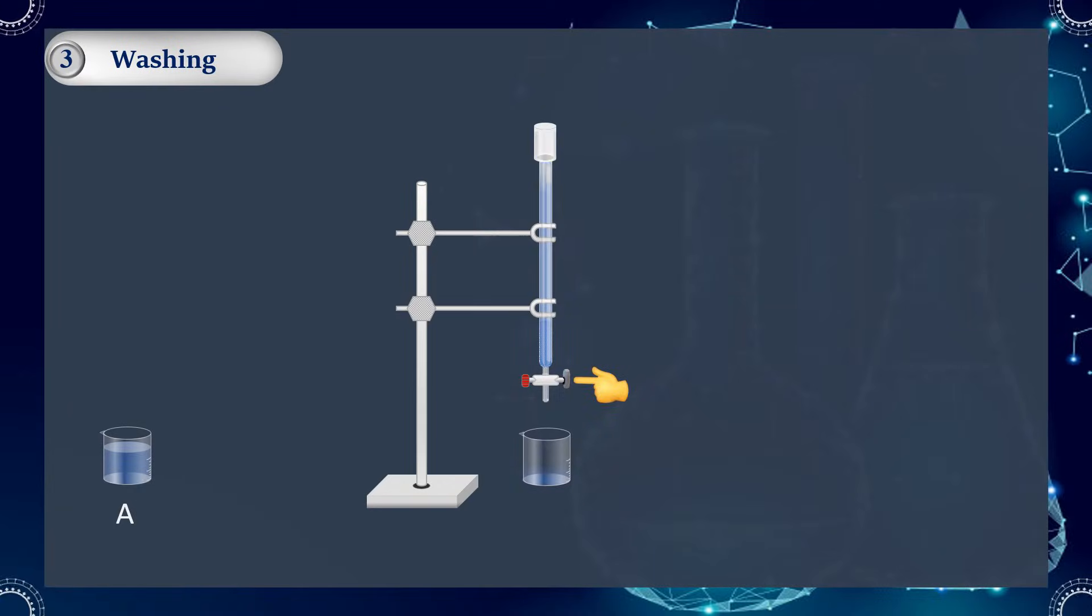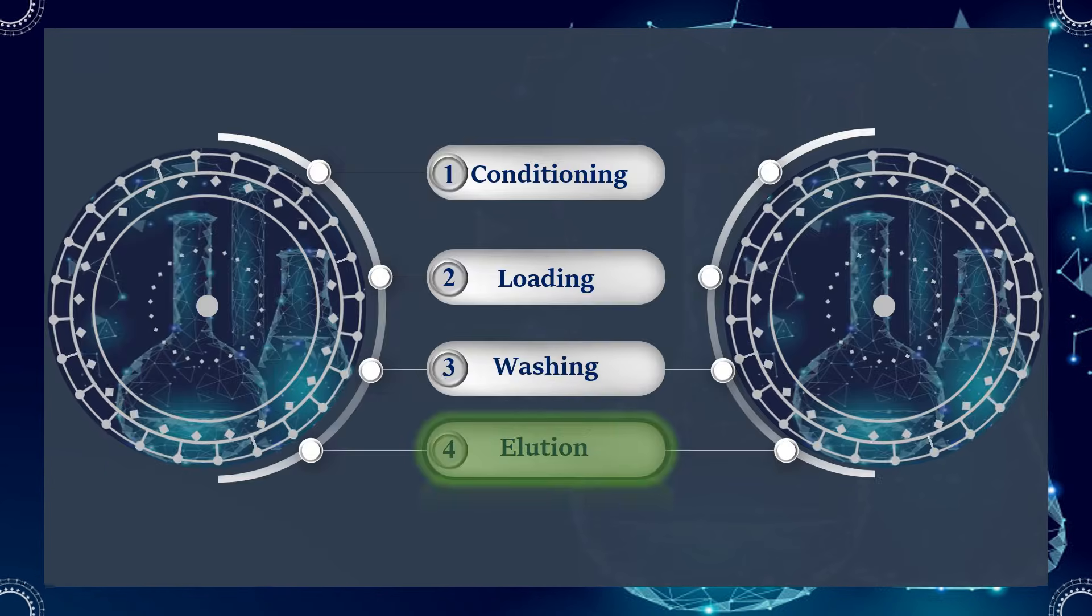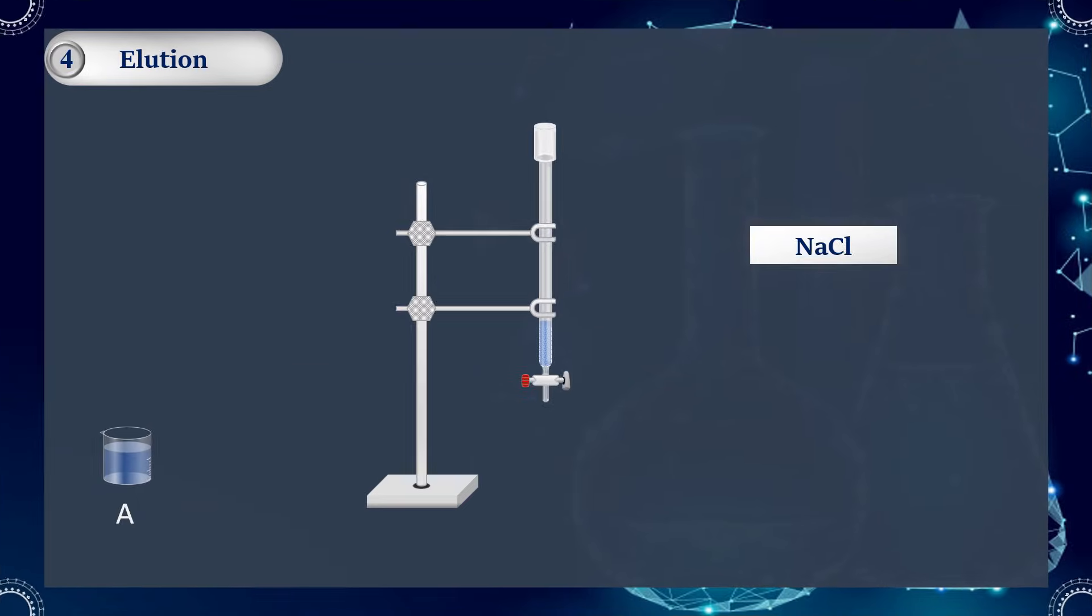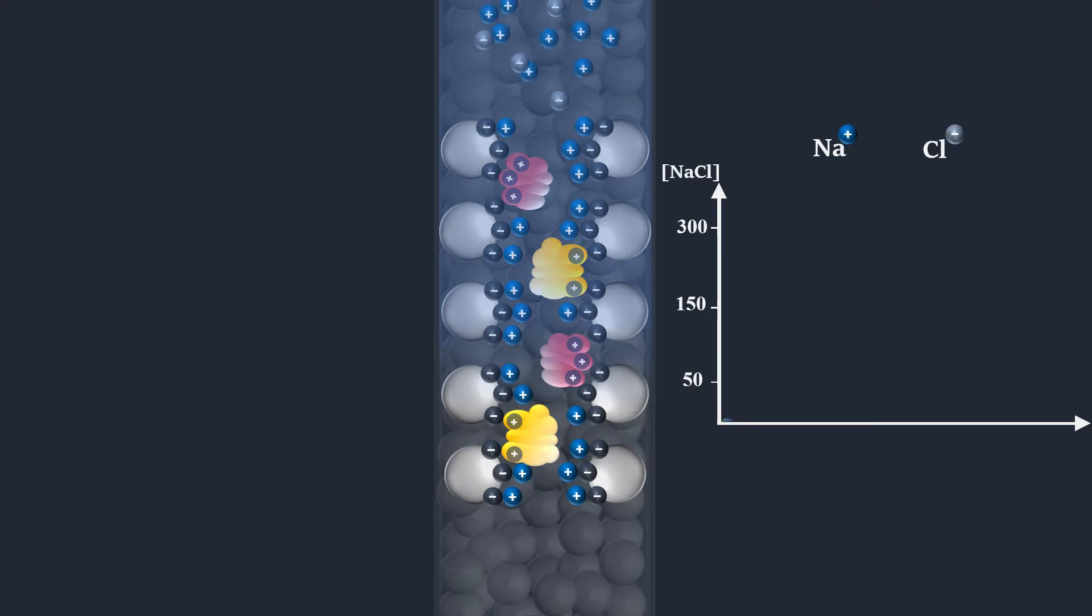When all the sample has been loaded and the column washed, conditions are altered in order to elute the bound proteins. Most frequently, proteins are eluted by increasing the ionic strength of the buffer, or occasionally by changing the pH. As ionic strength increases, the salt ions compete with the bound components for charges on the surface of the medium, and one or more of the bound species begin to elute and move down the column.